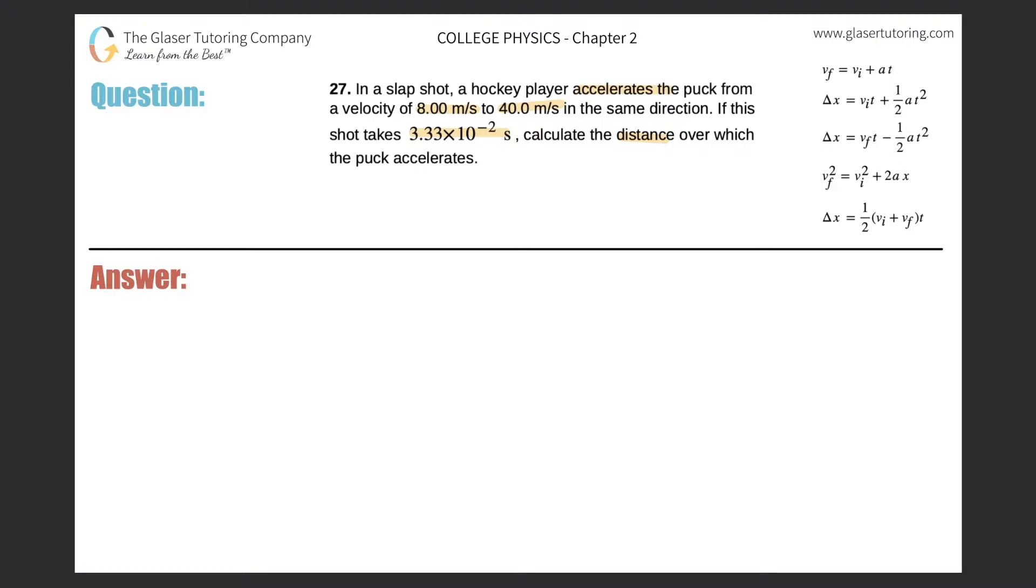All right, so quick sketch. Here we have a puck, and the puck is going to be pushed forward by the player. The initial velocity is going to be 8.00 meters per second, and it says that it's going to be accelerated to a final velocity of 40.0 meters per second.